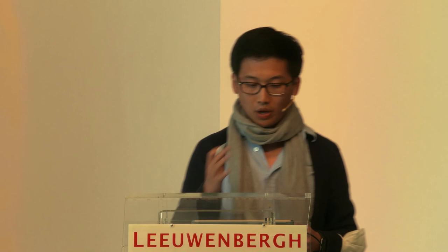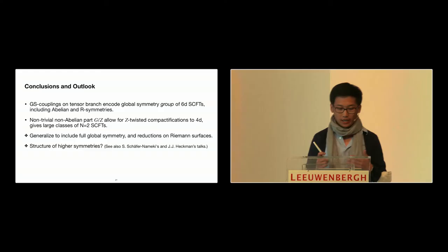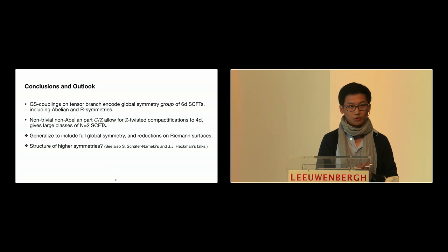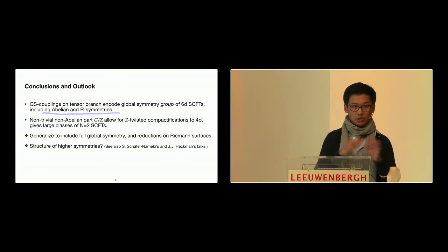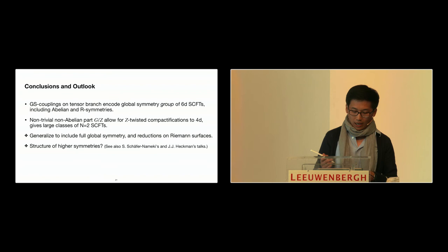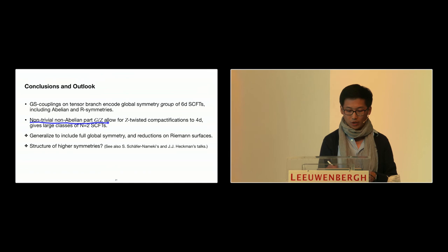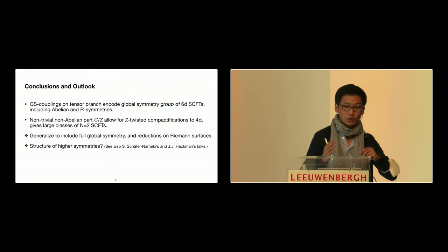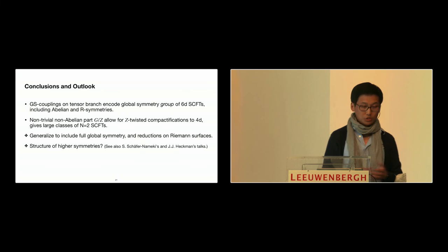This brings me to the end of my talk. I have told you a way, from the bottom-up based just on the Green-Schwarz couplings on the tensor branch of 6D SCFTs, how you can determine — or at least find a consistency condition for — turning on a non-trivial twist of your gauge and global symmetries. In particular, it includes the abelian and R-symmetries, which were previously not considered. We've mainly looked at applications to compactification on the torus for the non-abelian part of the flavor symmetry, which already gives a huge class of N=2 SCFTs for which we can compute the central charges and Coulomb branch operator dimensions.